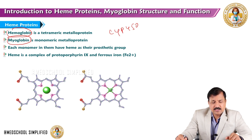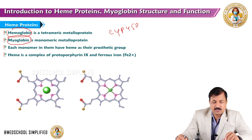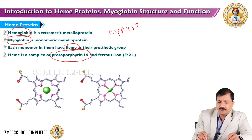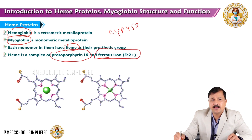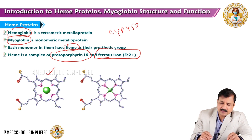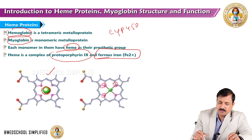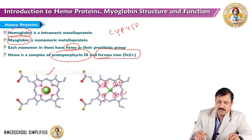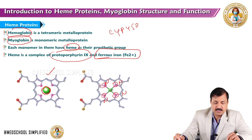Whether it is hemoglobin or myoglobin, each monomer present in a heme protein has a heme attached as a prosthetic group. Heme is a complex protoporphyrin IX where ferrous iron is attached in the center, especially in hemoglobin and myoglobin. The protoporphyrin IX ring is shown here, and four nitrogens present in the protoporphyrin ring make a coordinated interaction with the ferrous iron.